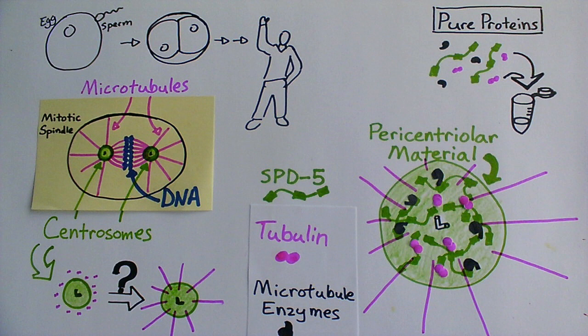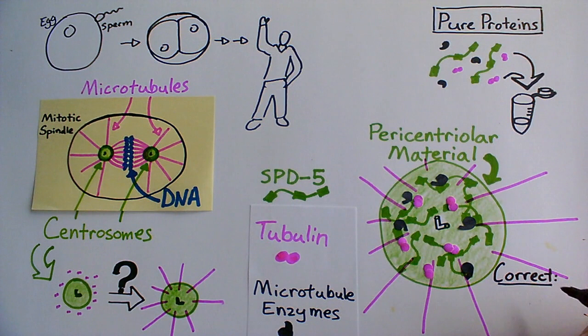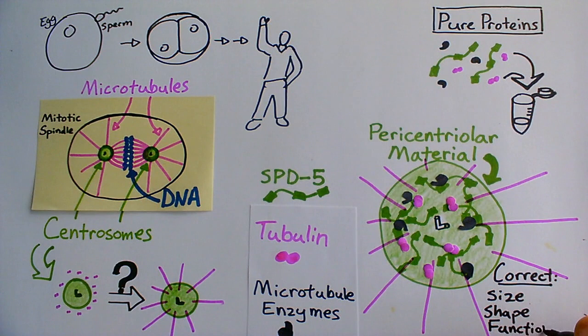With these experiments, we were able to build structures that were similar to centrosomes in C. elegans embryos in terms of size, shape, and the ability to specifically attract other centrosome-related proteins.